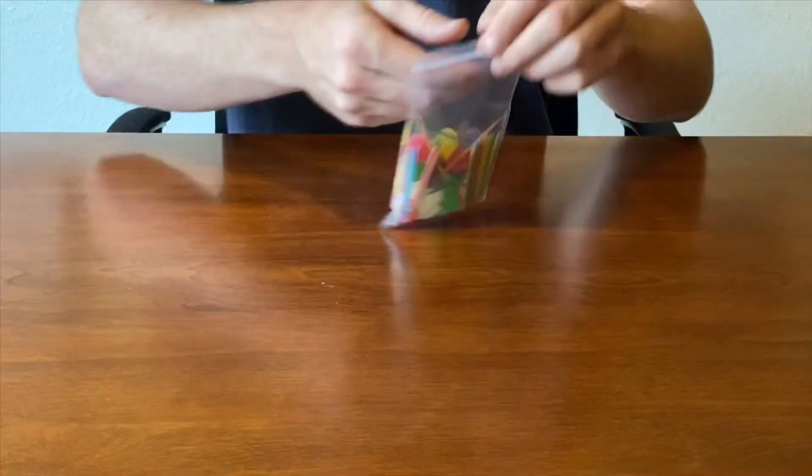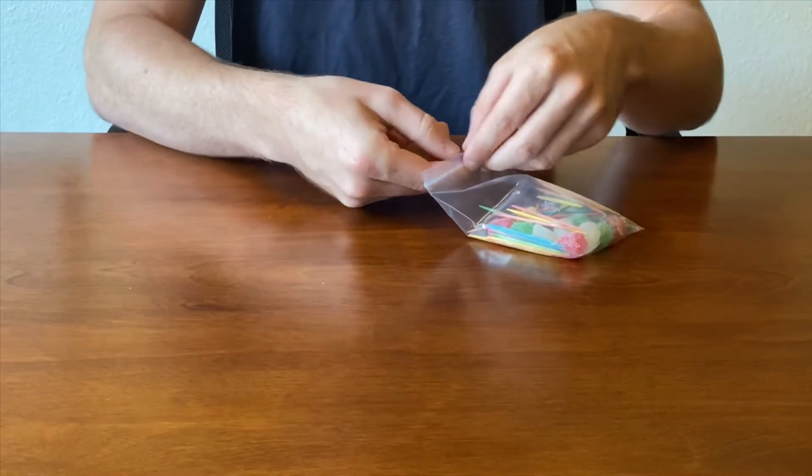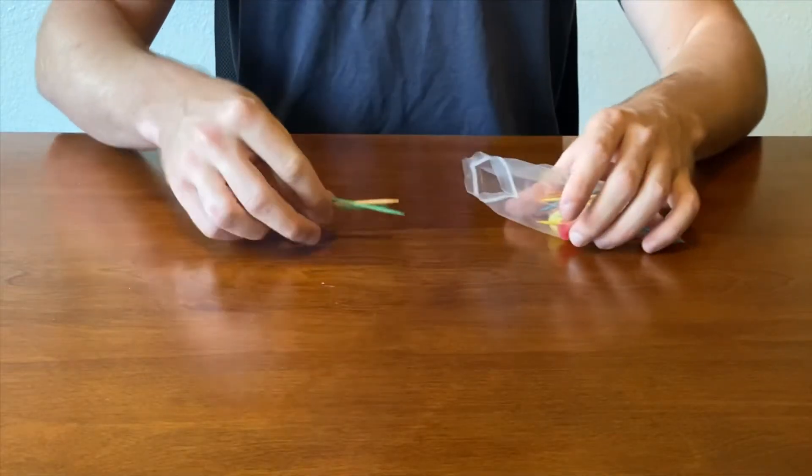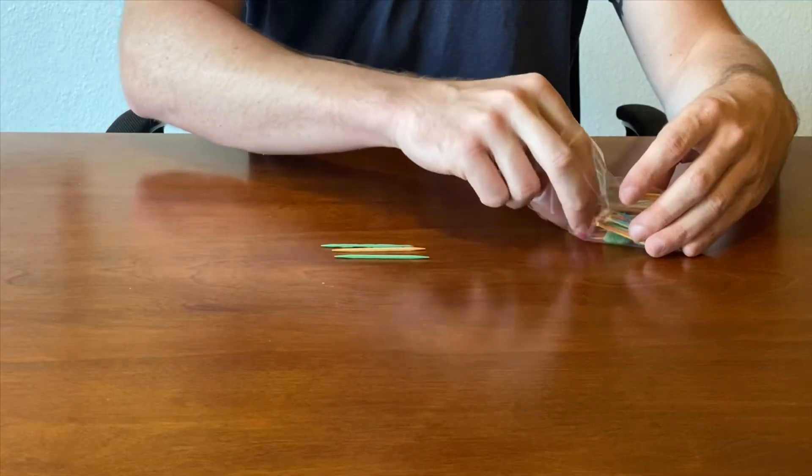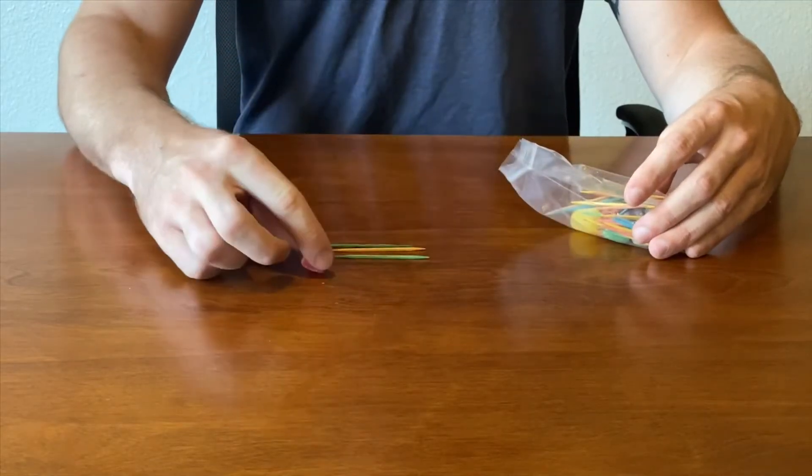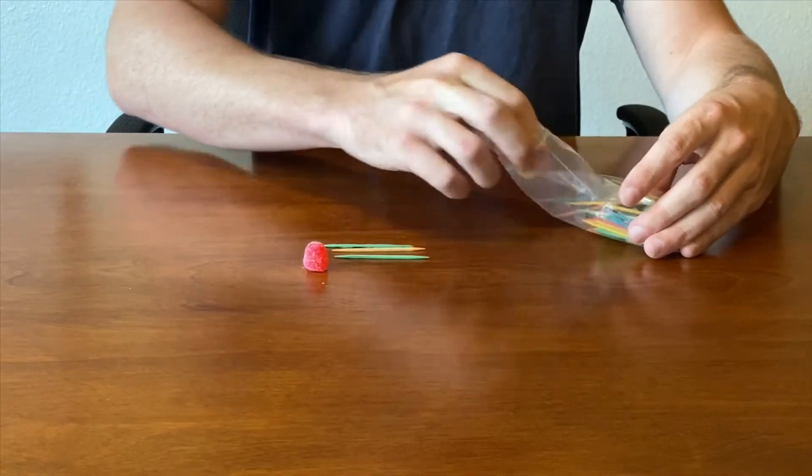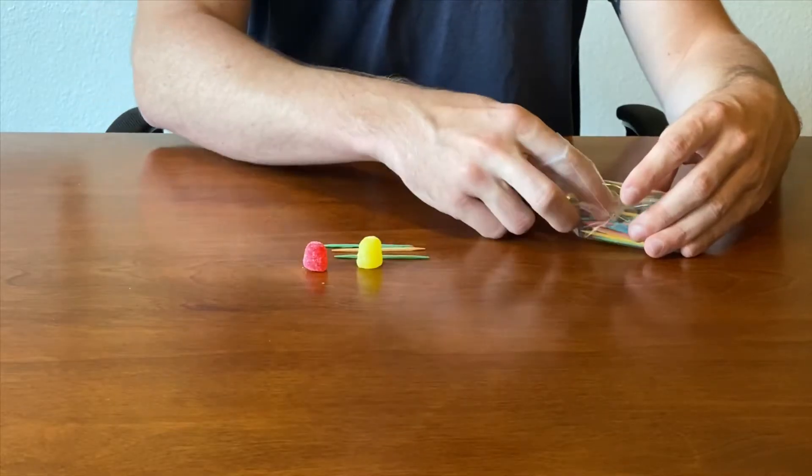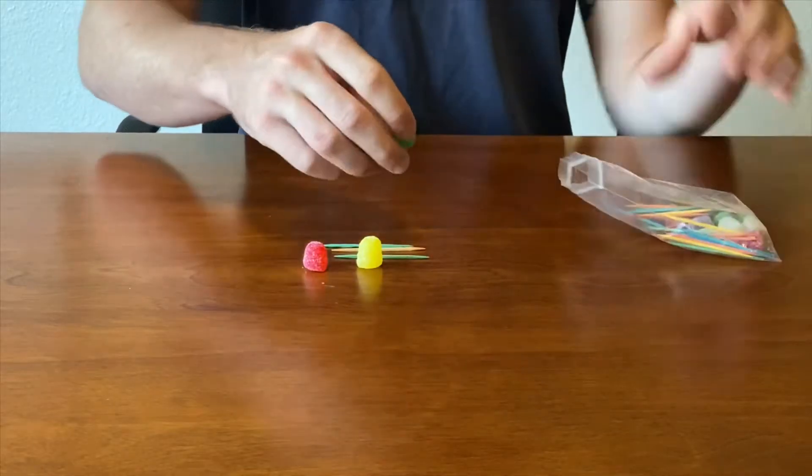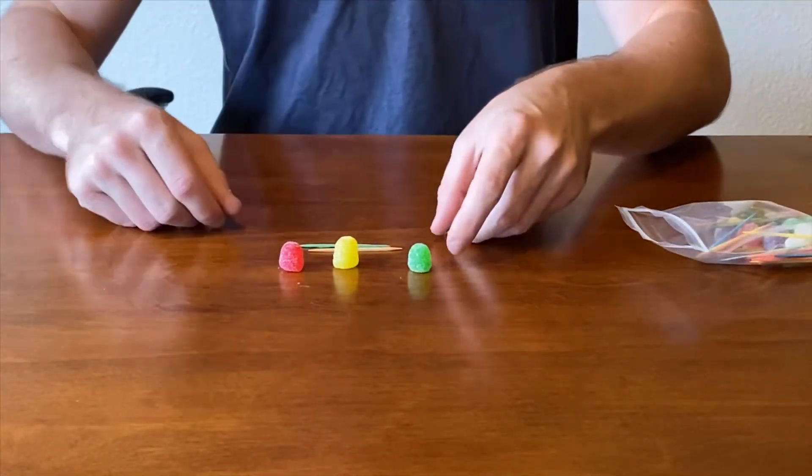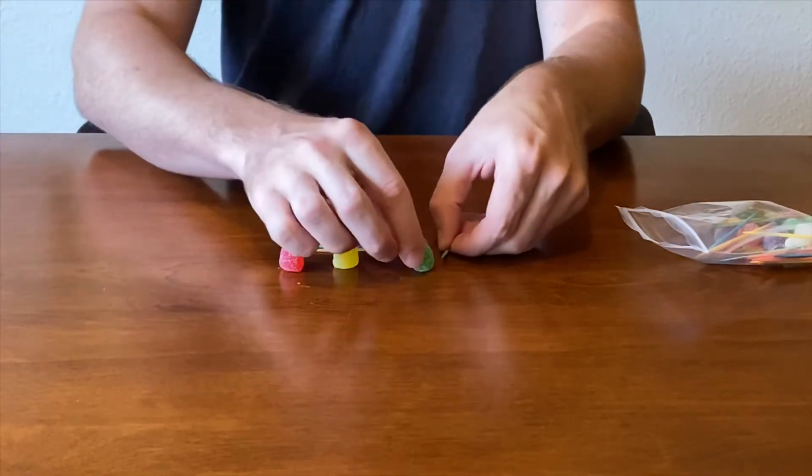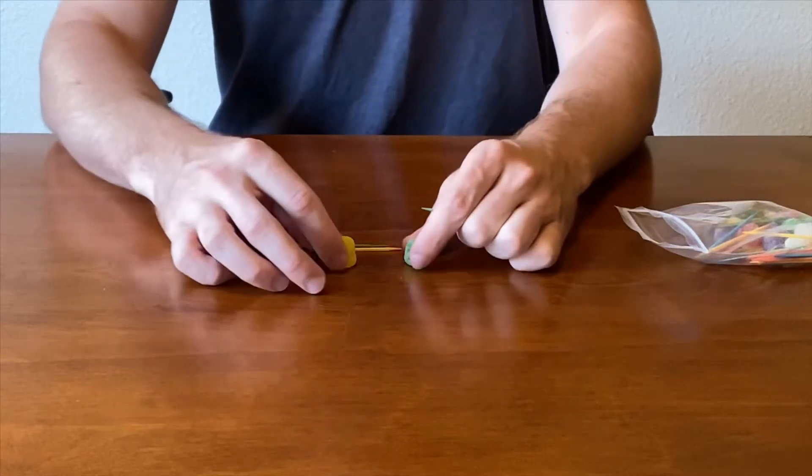Our first step: you're gonna have to open your bag of course and just take out three toothpicks and three gumdrops. Basically what we're gonna be doing is making a triangle with our gumdrops and our toothpicks.